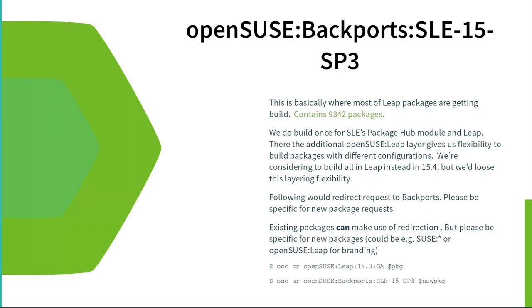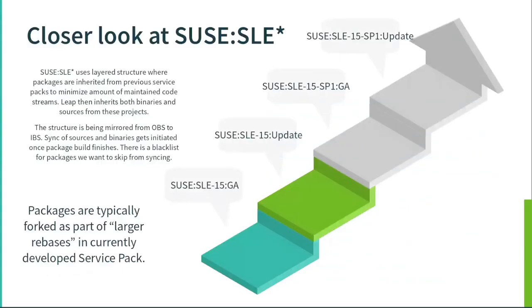Let's look at SLE-star. It's basically a layered structure. Everything that was once released started as SLE 15 GA. If there was an update, the package got updated — that's SLE 15 update. Then SLE 15 SP1 perhaps brought a newer version of GNOME or something. You can see how it's glued together through inheritance. We are supporting code streams in parallel — SP1 LTS I believe ended recently — and we're trying to minimize the number of code streams supported by our maintenance team.